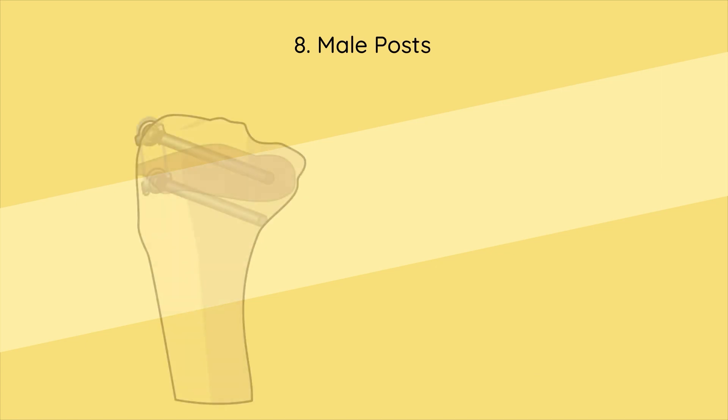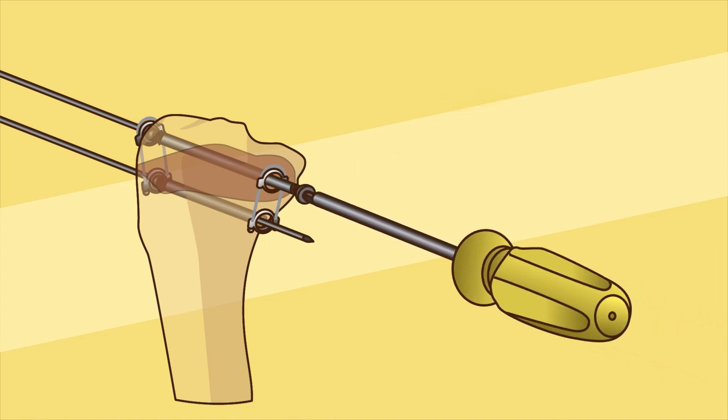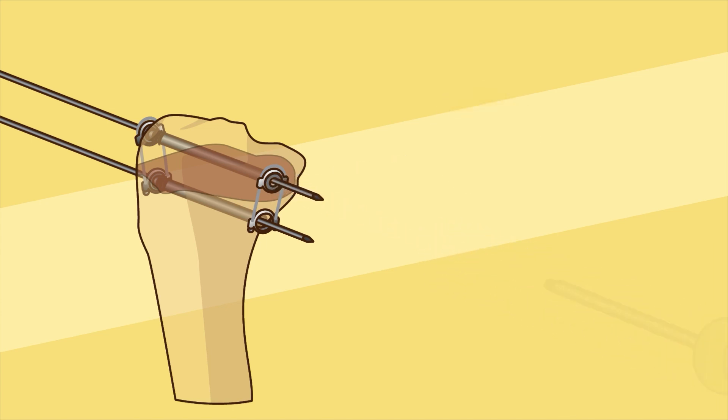Step eight - male posts: Advance both guide wires until they exit the skin on the distal side. Make a skin incision spanning the guide wires and dissect down to the periosteum to expose the bone. Slide the selected gyro over the guide wires with the top markings facing up. Insert both epiphyseal and metaphyseal male posts into the female posts, ensuring that the male post threads are properly engaged into the bone. Close both incisions.